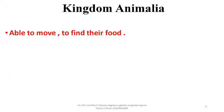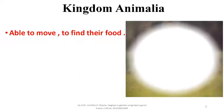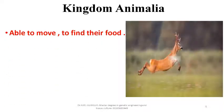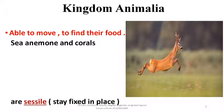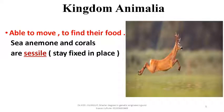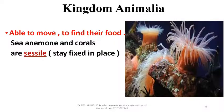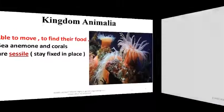Animals are able to move from place to place to find food, to mate, or to escape from predators — with exceptions. For example, sea anemones in corals, and some others, stay fixed in place.